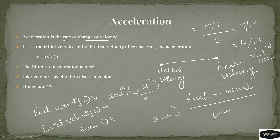Acceleration is a vector quantity. Acceleration equals final velocity minus initial velocity divided by total time taken. The unit is meter per second squared, and the dimension is LT⁻².